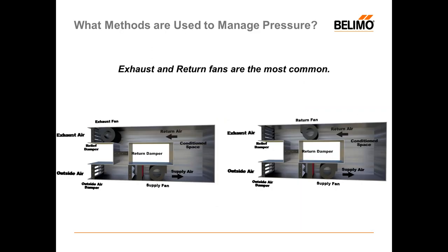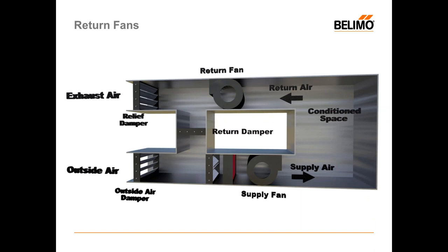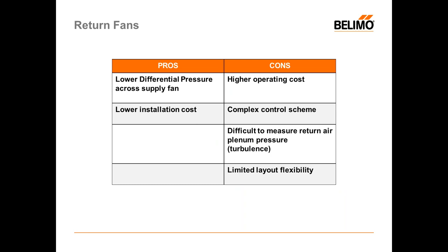Exhaust and return fans. The economizer also consists of an additional fan mounted in the AHU or RTU. The key difference between that and the return fan is that the return fan runs all the time. Pros: low differential pressure across the supply fan, because you've got the added return fan boosting the pressure, and lower installation costs because you don't have to add as large a fan. Cons: higher operating costs because your fan is running constantly, complex control schemes because you have to have two differential pressure transducers — one in the system and one for the building. It's difficult to measure because of turbulence in ducted returns and limited layout flexibility.